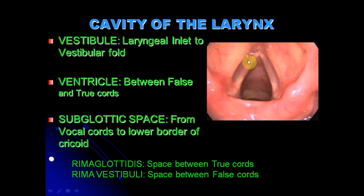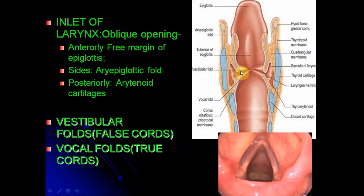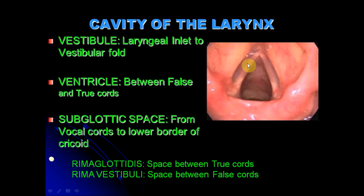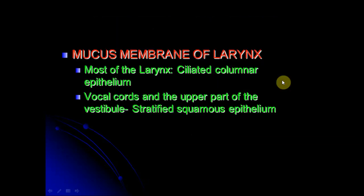These two folds divide the laryngeal cavity into three parts: the vestibule, ventricle, and subglottic space. The vestibule extends from the laryngeal inlet to the level of the vestibular folds. The ventricle lies between the true and the false vocal cords, and it may extend laterally and can sometimes even dilate to form what is called a laryngocele. The subglottic space extends from the true vocal cords to the lower border of the cricoid cartilage. The gap between the true vocal cords is called the rima glottidis, and the gap between the false vocal cords is called the rima vestibularis.